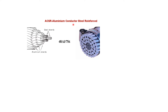Aluminum conductor steel reinforced, or ACSR. We will discuss the center point of the steel cable and the strength of the steel cable, with aluminum on the outside. This number represents 48 aluminum strands on the outer layer and 7 steel cables, quantity 7.